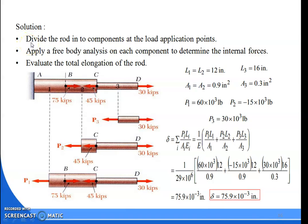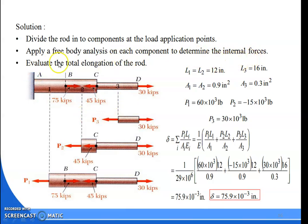What we have to do is divide the rod — that means the whole diagram — into components at the load application points. According to the application of the load, subdivide the whole structure into individual sections, like a free body diagram. Apply free body analysis along the whole body and each component to determine the internal forces. Then evaluate the total elongation. So first, subdivide the whole system and find its internal forces individually, and after that we calculate.